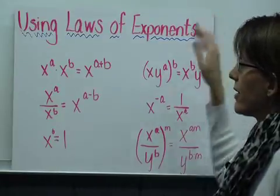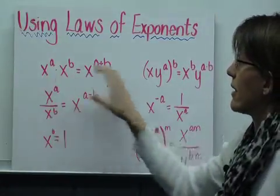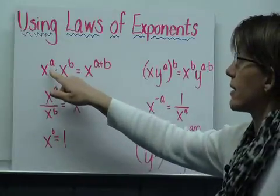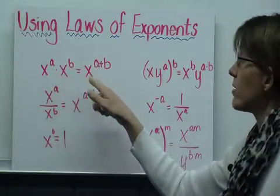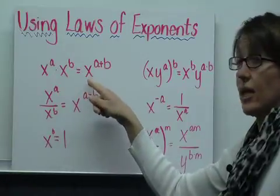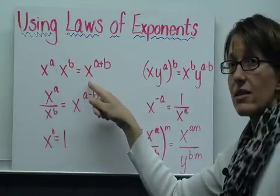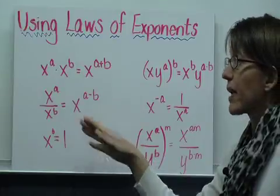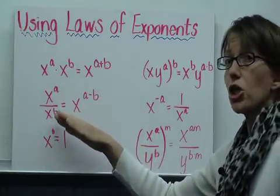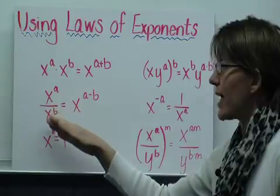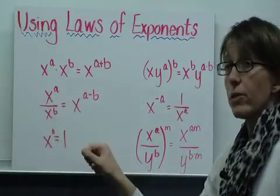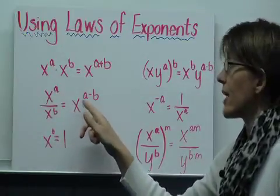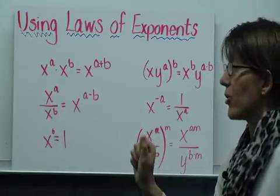First of all, if we have the same base and we're multiplying two of the same base that have exponents, we can simplify that by keeping the base the same and adding the exponents together. If we're dividing two of the same base and each has an exponent, we can keep the same base and subtract exponents.